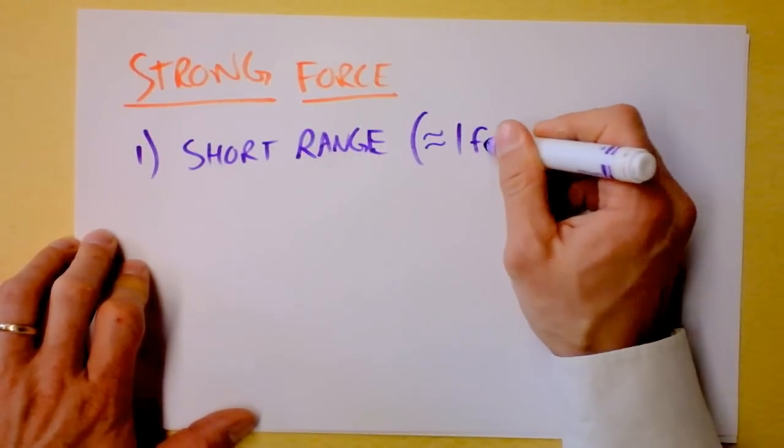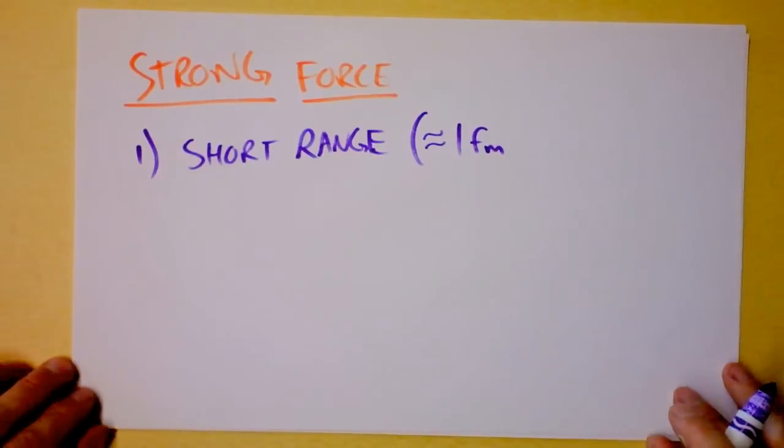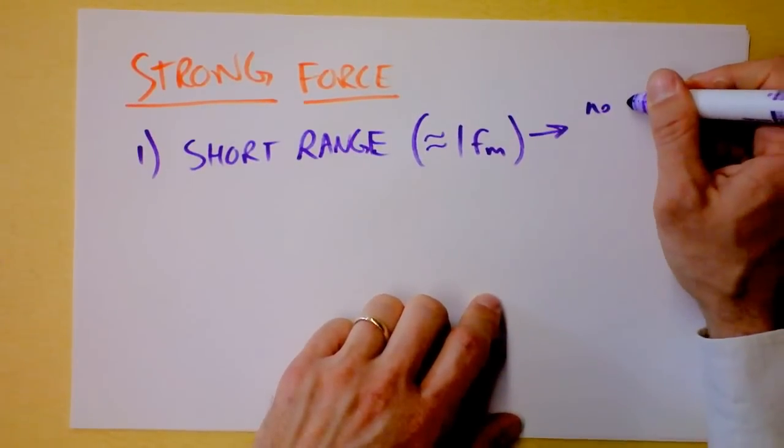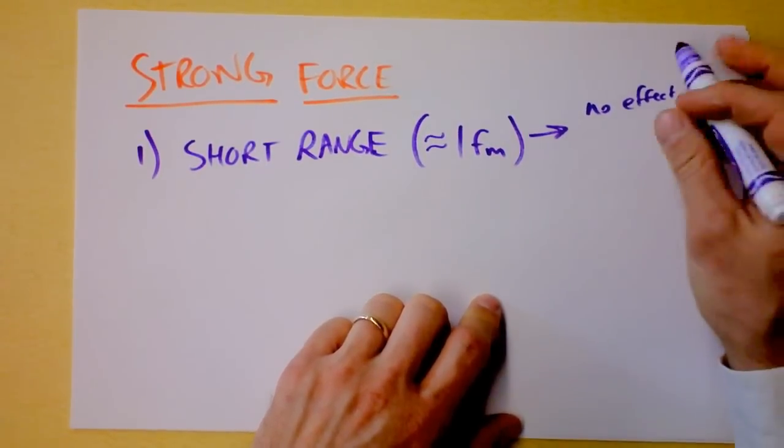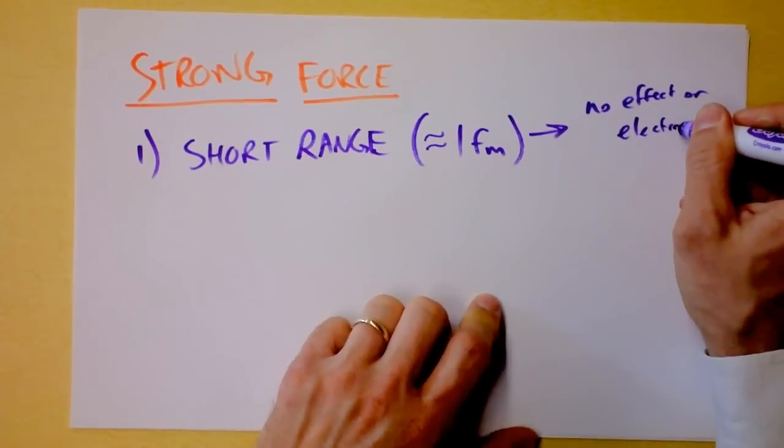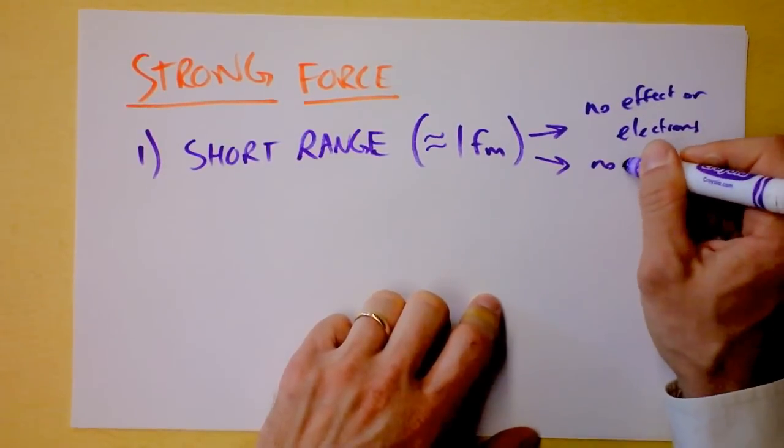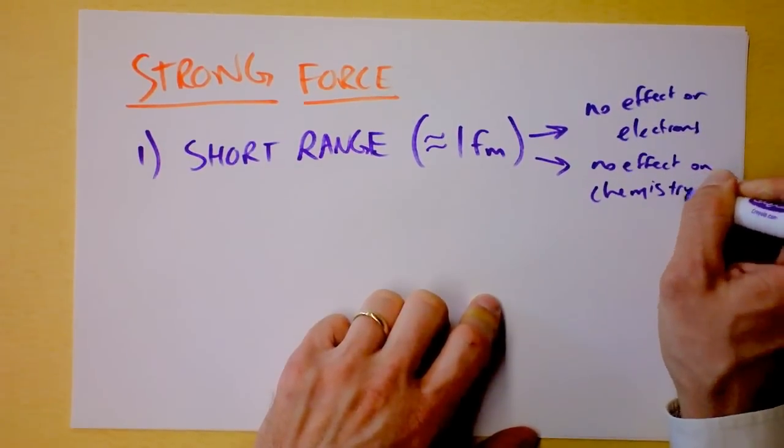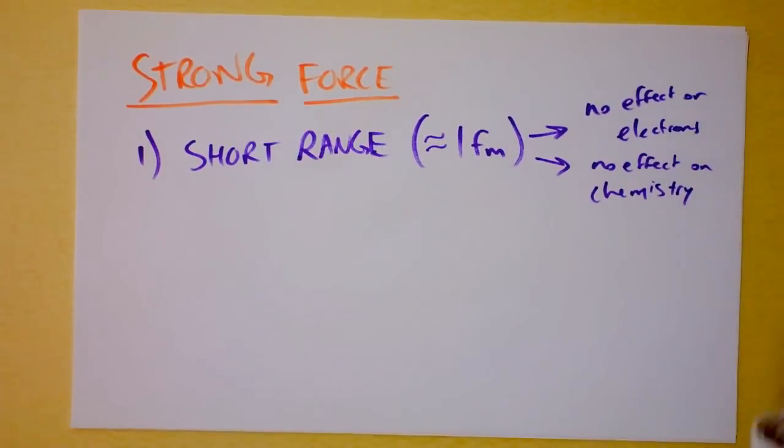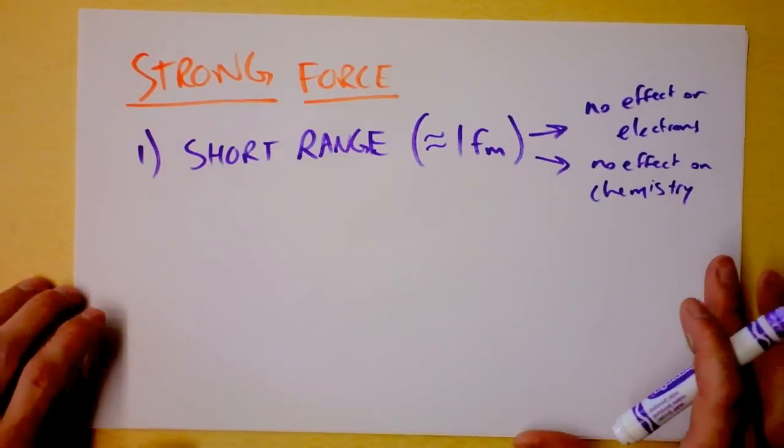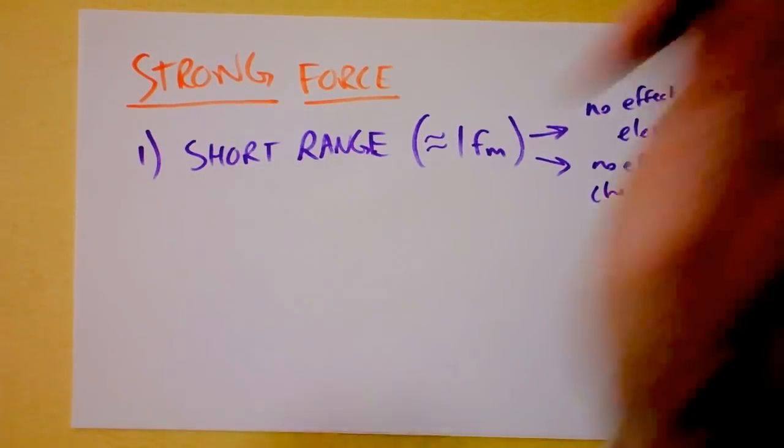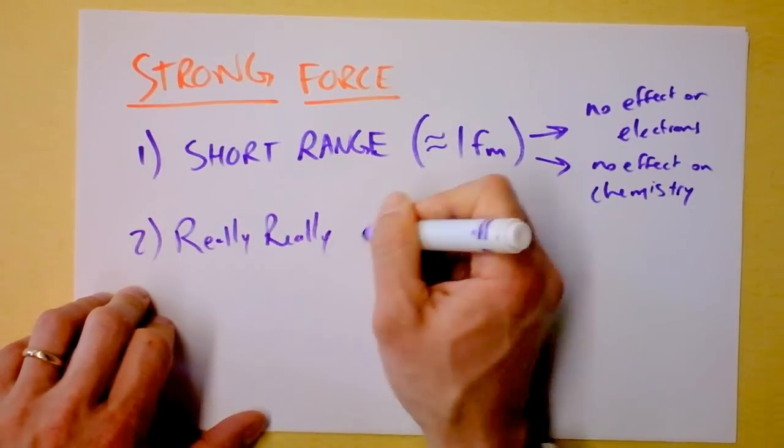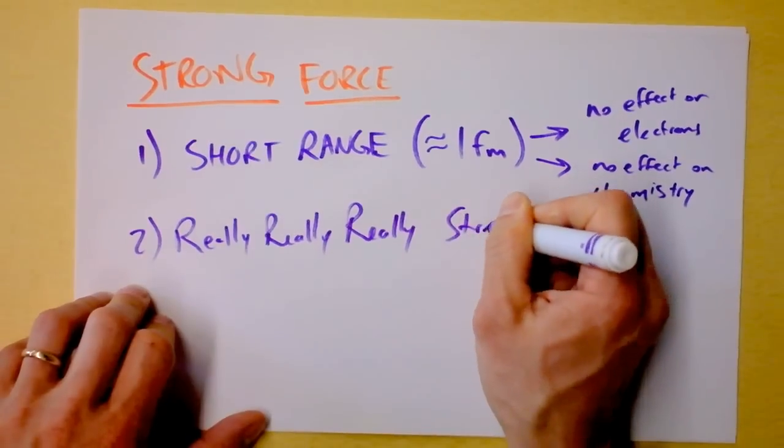I'm talking about one femtometer or so of action, which means that it does not affect, no effect on electrons or chemistry at all, no effect on chemistry. The chemists don't need to worry about the strong nuclear force because it is such short range. Let's see, what else do we need to talk about? Oh, it's also really, really, really strong.